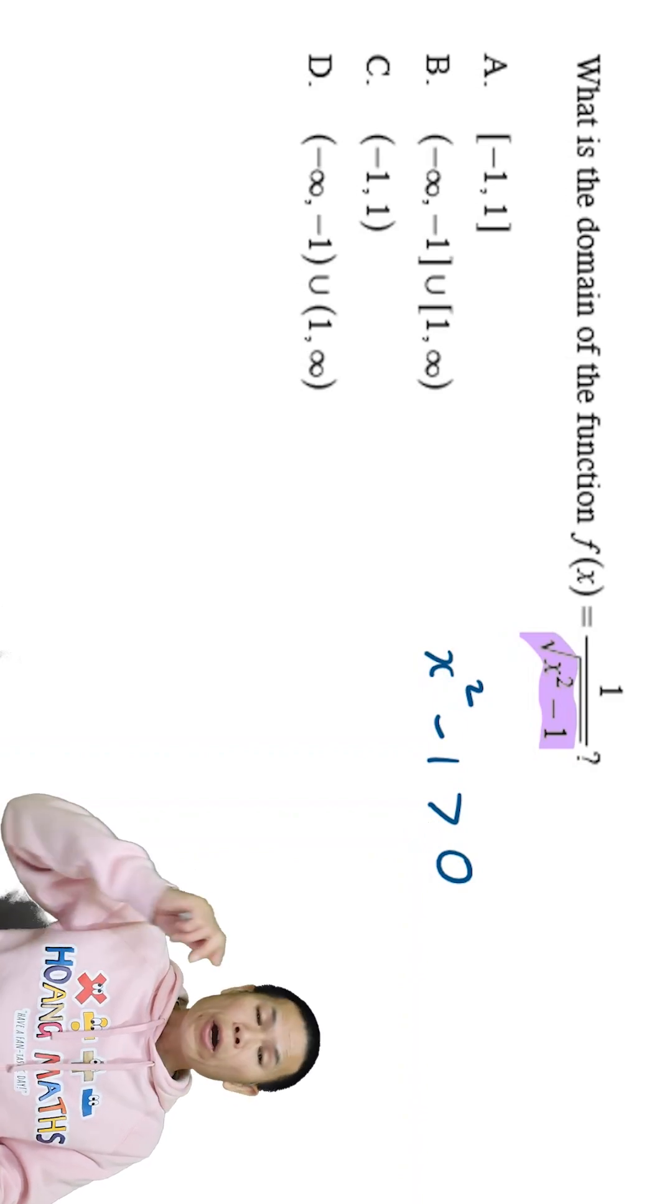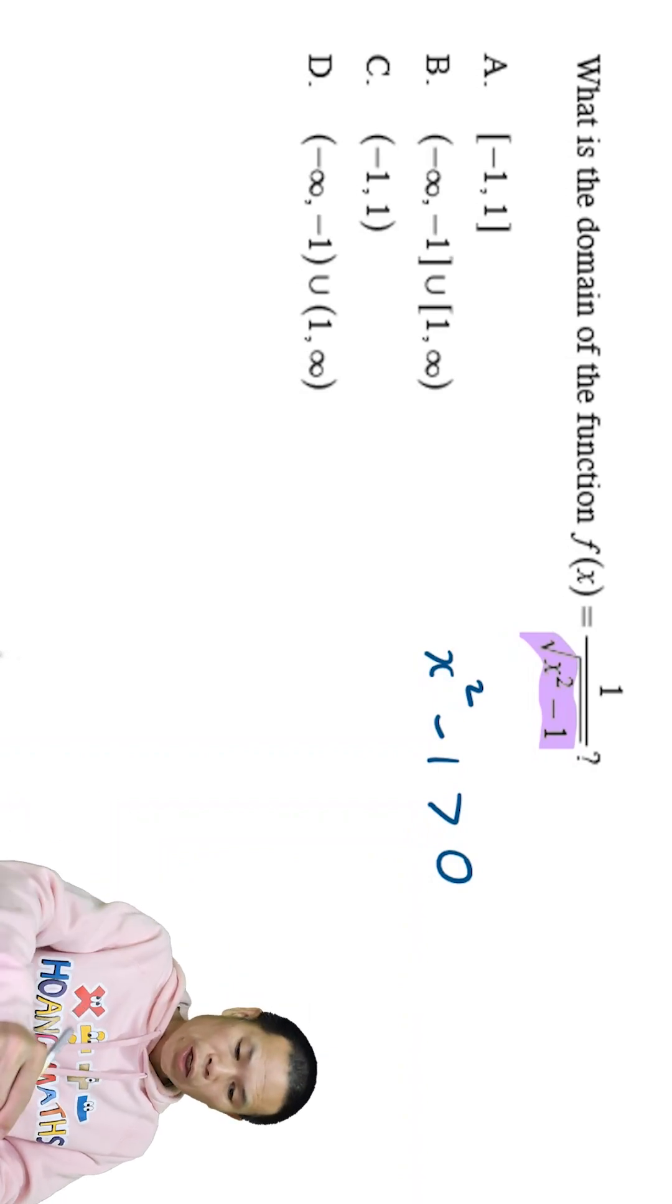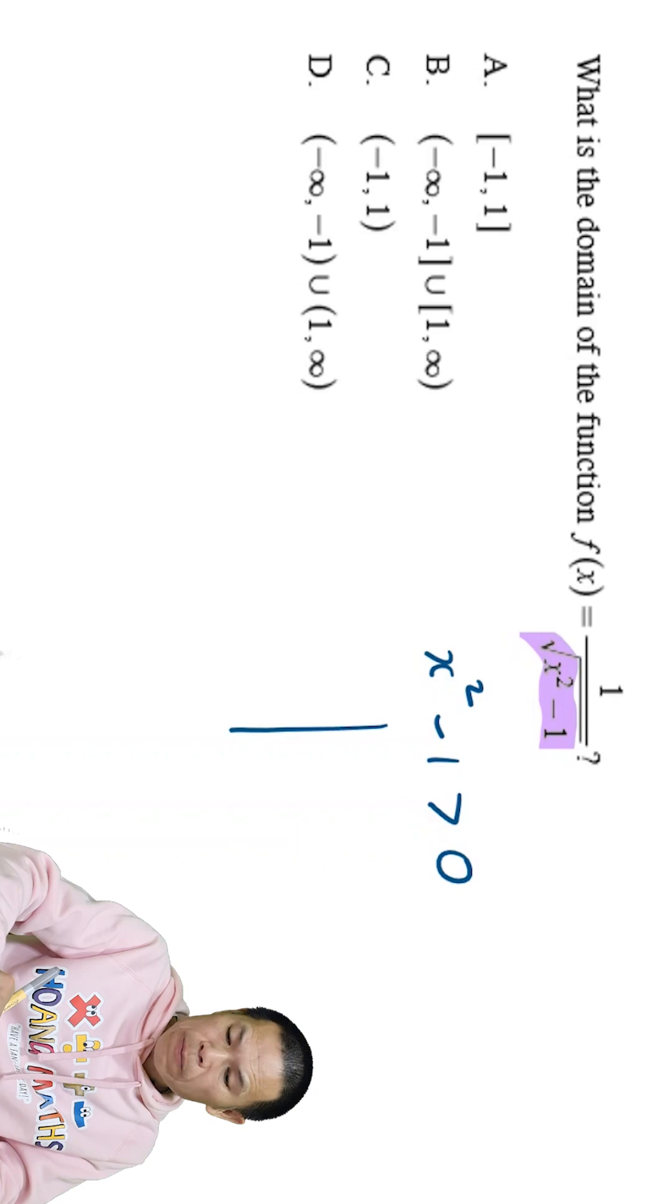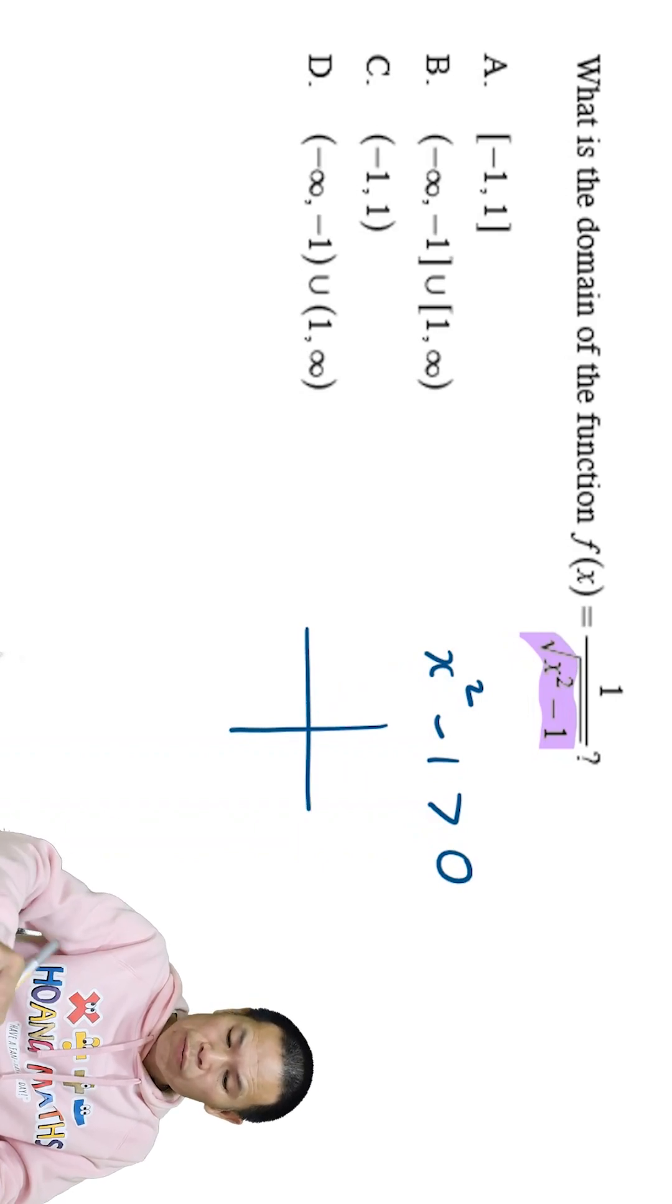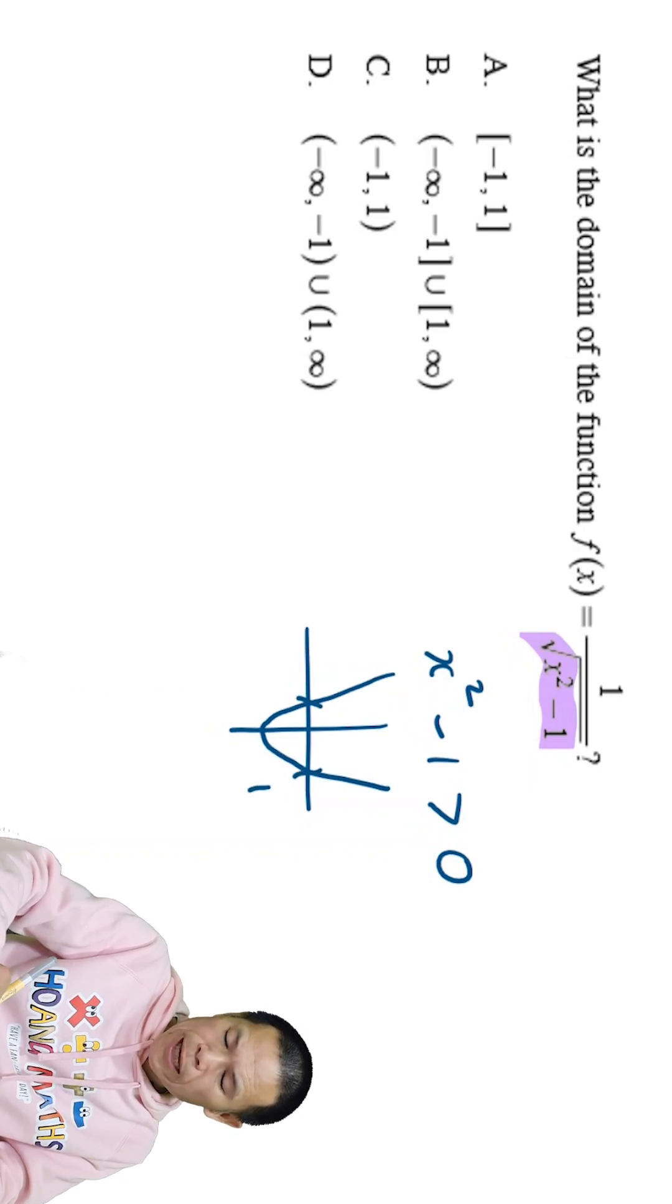Therefore, we cannot have zero. So we remove this. So x squared minus 1 must be greater than zero. Let me just quickly solve this. We know that x squared is like this. But minus 1, we just move down 1 unit. So this is 1, this is negative 1. That is the x-intercept.